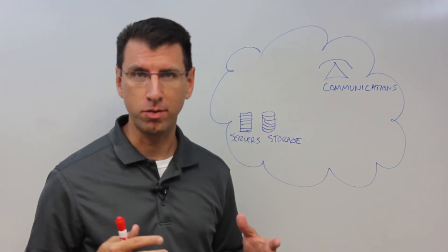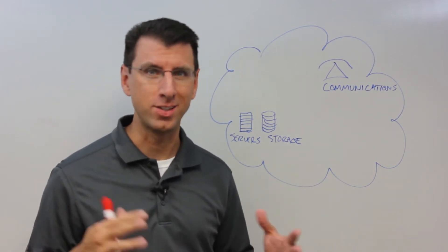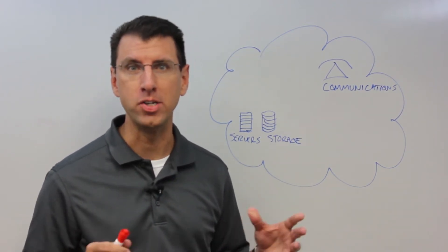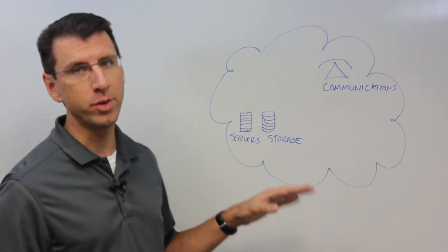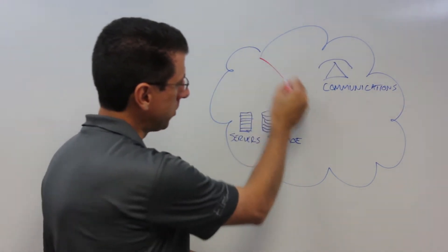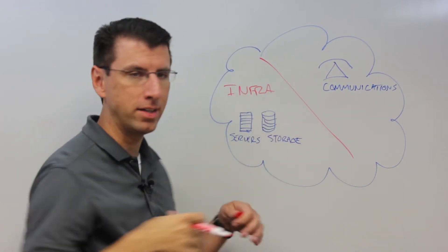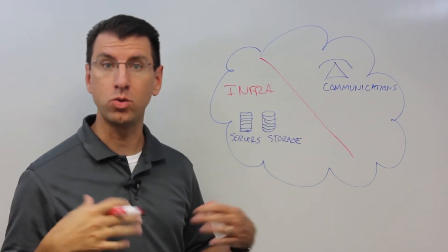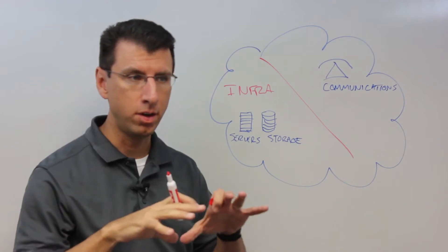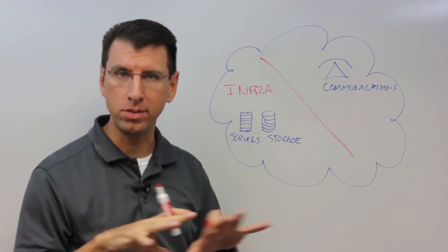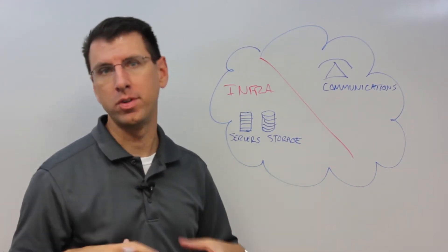There's a couple different types of as a service applications or offerings that I want to differentiate. The first one is infrastructure as a service. Infrastructure as a service is really all about delivering server capacity, storage capacity, and other kinds of foundational levels of technology as a service over the cloud.